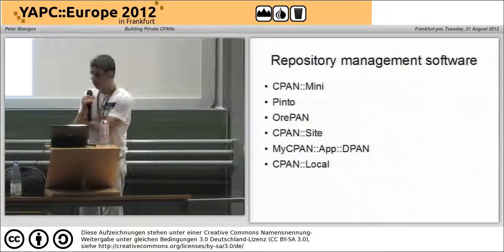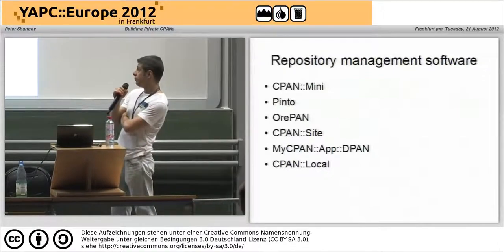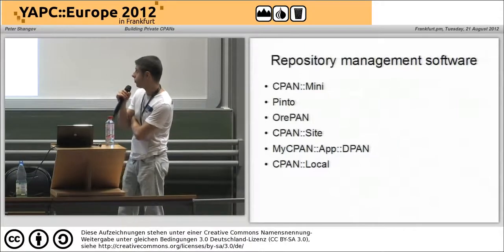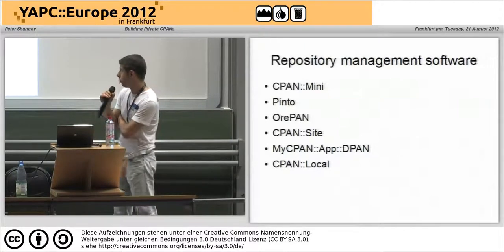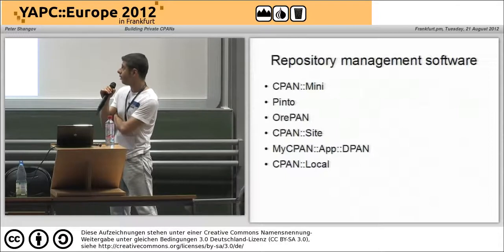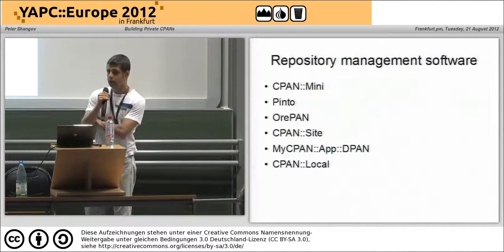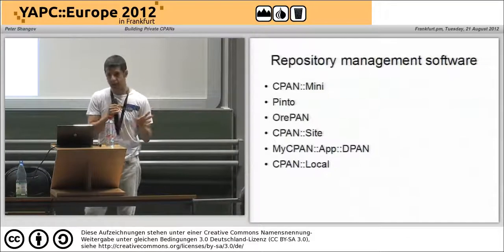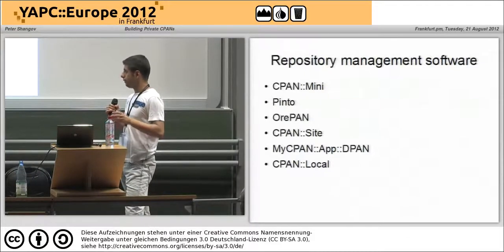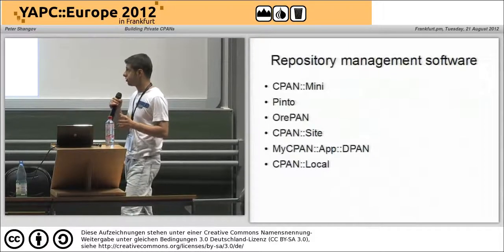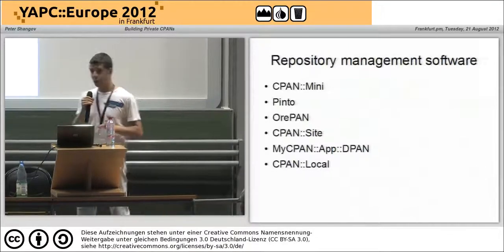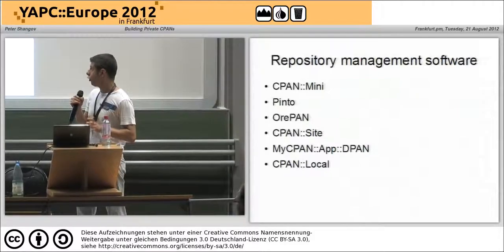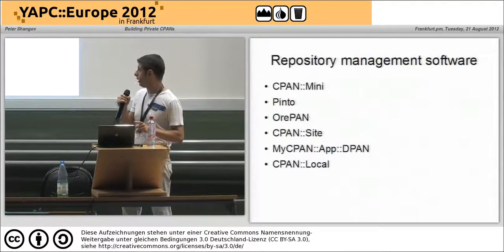Right now, if you look at what's out there on CPAN, CPAN mini is the most popular library for managing your own repository — John Allen before me talked about that. However, CPAN mini, although it's very good at what it does — which is mirror some parts of CPAN and then add some of your local distributions — if you want to do something more complicated than that, CPAN mini is really not a very good choice. We'll talk a bit more about that in a minute.